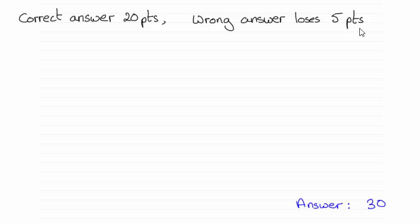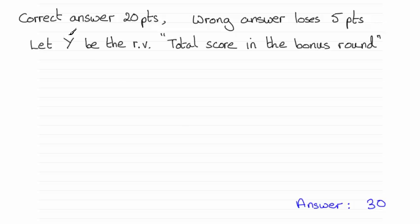So what I need to do first of all is to think about drawing up a probability distribution table for this bonus round looking at the total number of points that you could score and then I should be able to work out the expected value from it. So I need to define a random variable and I'm going to let it be Y. Let Y be the random variable, the total score in the bonus round.